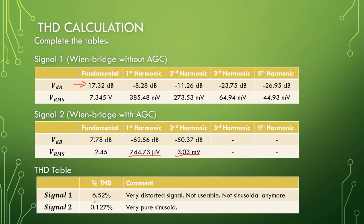Signal two is 0.127 percent, which is a very pure sinusoid.